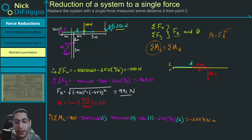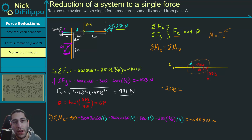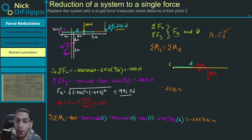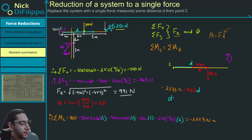So minus 2,333 newton-meters is this side of the equation, equal to the resultant side. From the resultant diagram, the 450 newton x component goes through point C so it makes no moment about C. The 883 newton y component, pointing down, is counterclockwise negative: minus 883 times D. Solving for D, we get D equals minus 2,333 divided by minus 883.